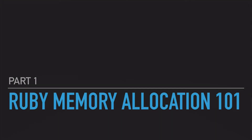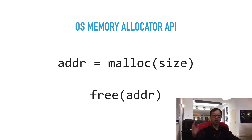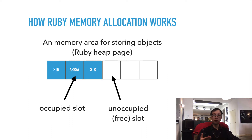Now let's go over part one: Ruby memory allocation 101. The operating system comes with a library called the memory allocator — the component that keeps track of what memory is in use and what is available. Its API is simple: the malloc function allocates a piece of memory of a requested size and returns the memory address or an error. The free function frees the memory piece at a given address. Ruby uses that API to allocate memory areas for storing Ruby objects. Such an area is called a Ruby heap page, which is split into equal-size slots. One Ruby object occupies one slot, whether it's a string, an array, a class, or any other Ruby object.